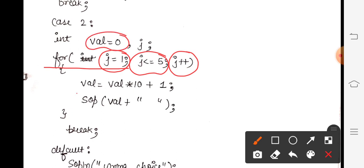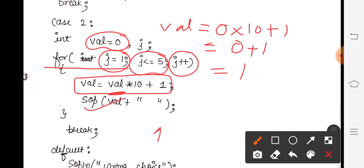And val initially we have taken 0. So the first term will be formed like this: val = val × 10 + 1. Now what is the value of val? 0. 0 × 10 = 0, plus 1 = 1. That means I will get the first term as 1. So 1 will print.